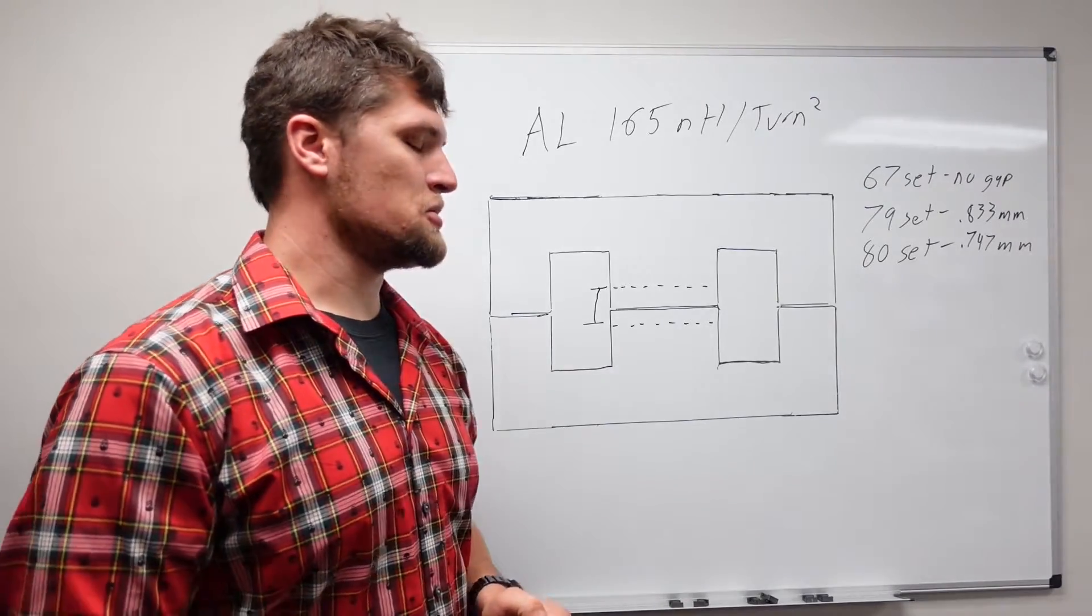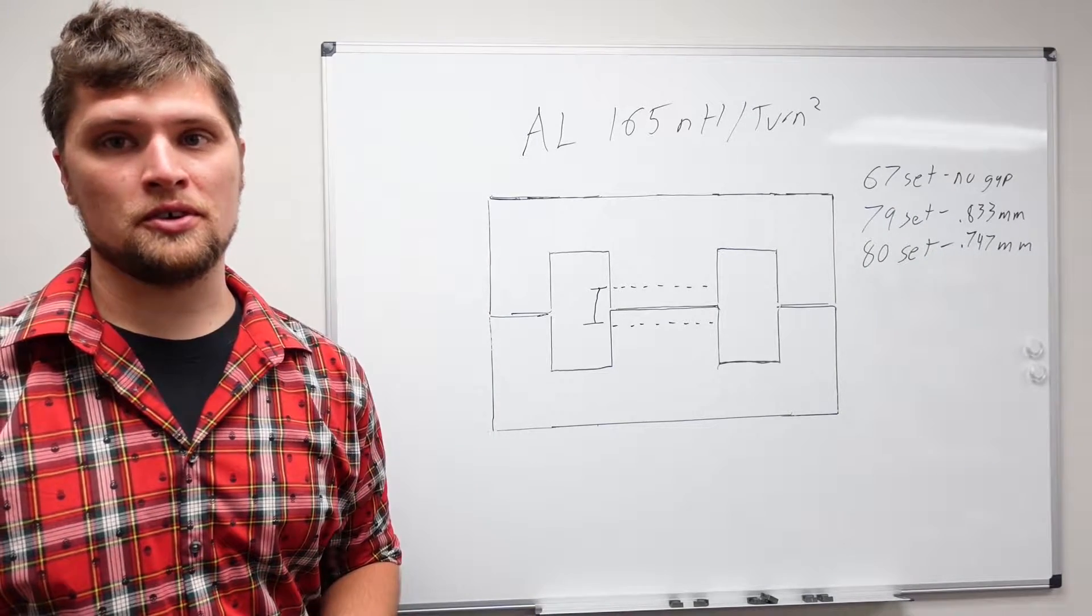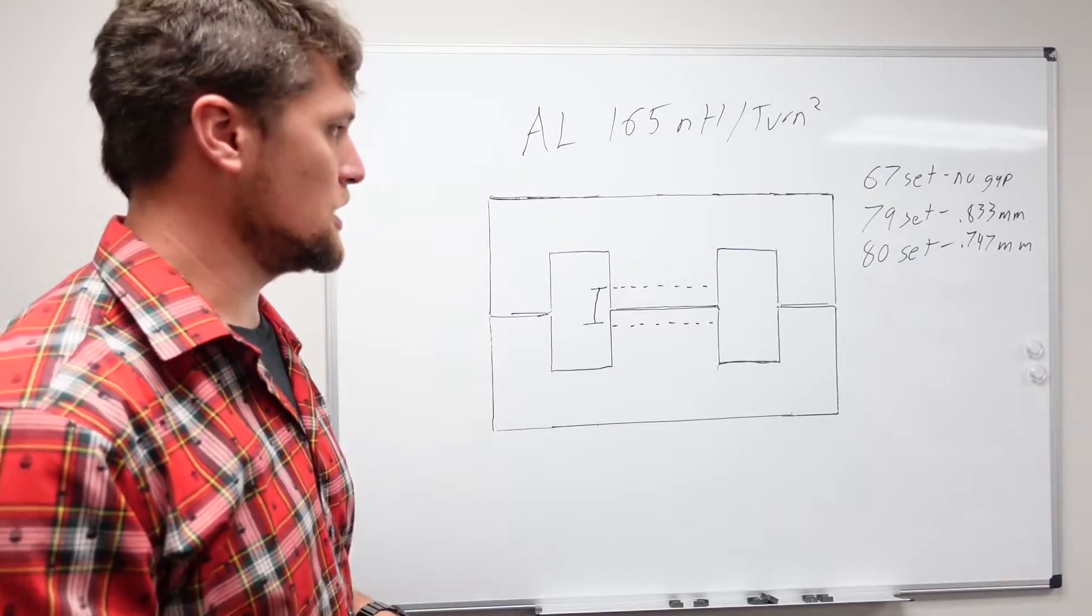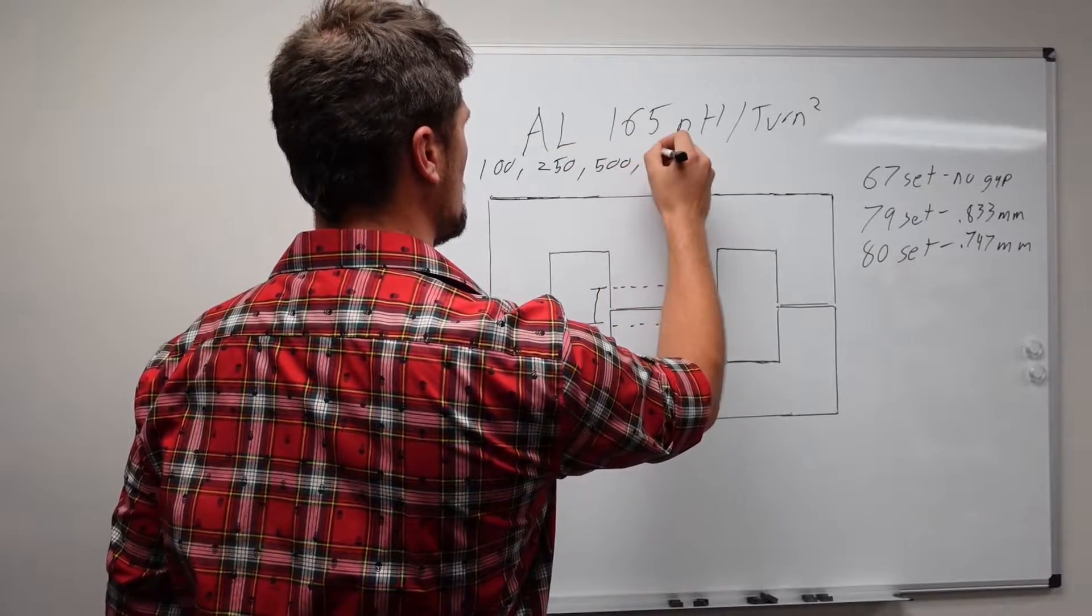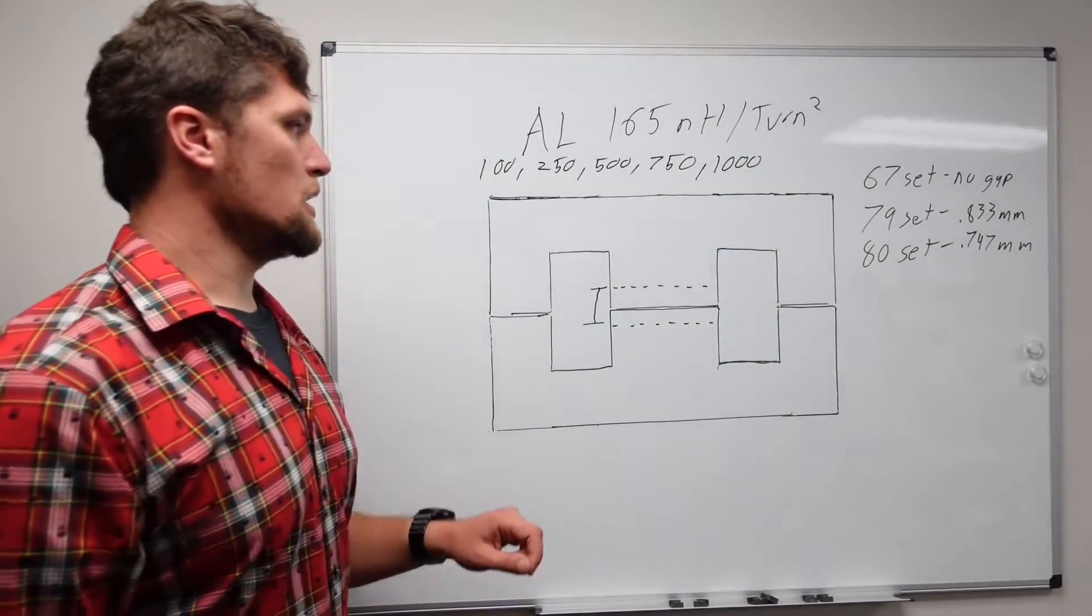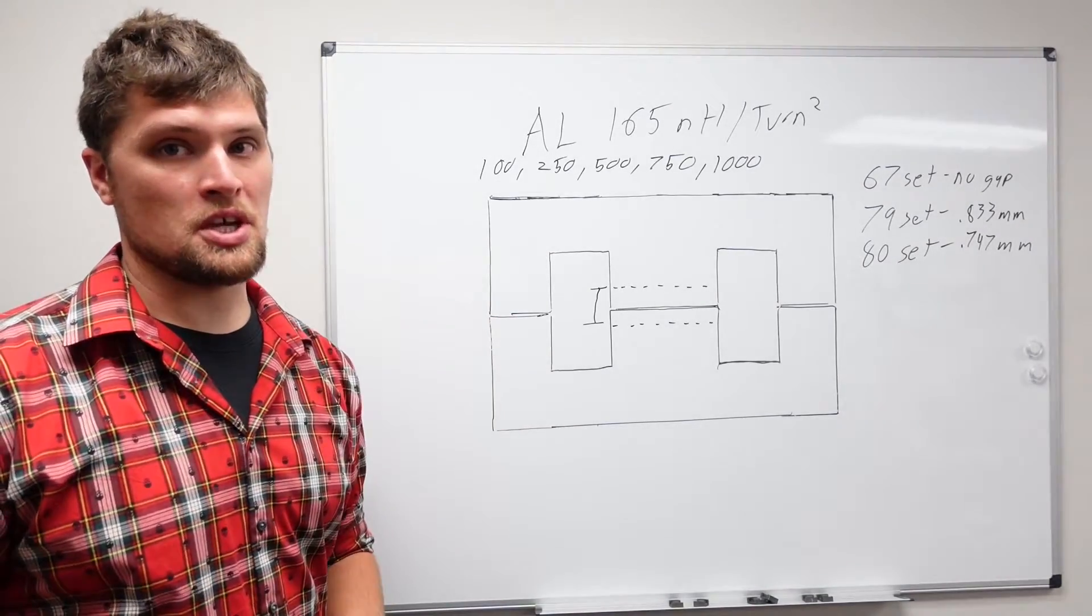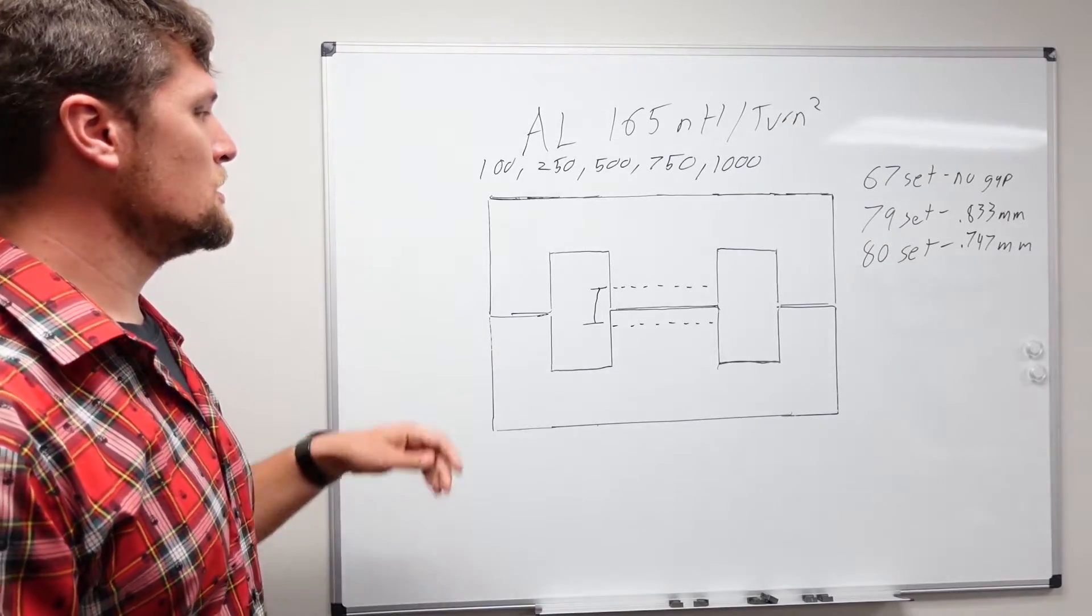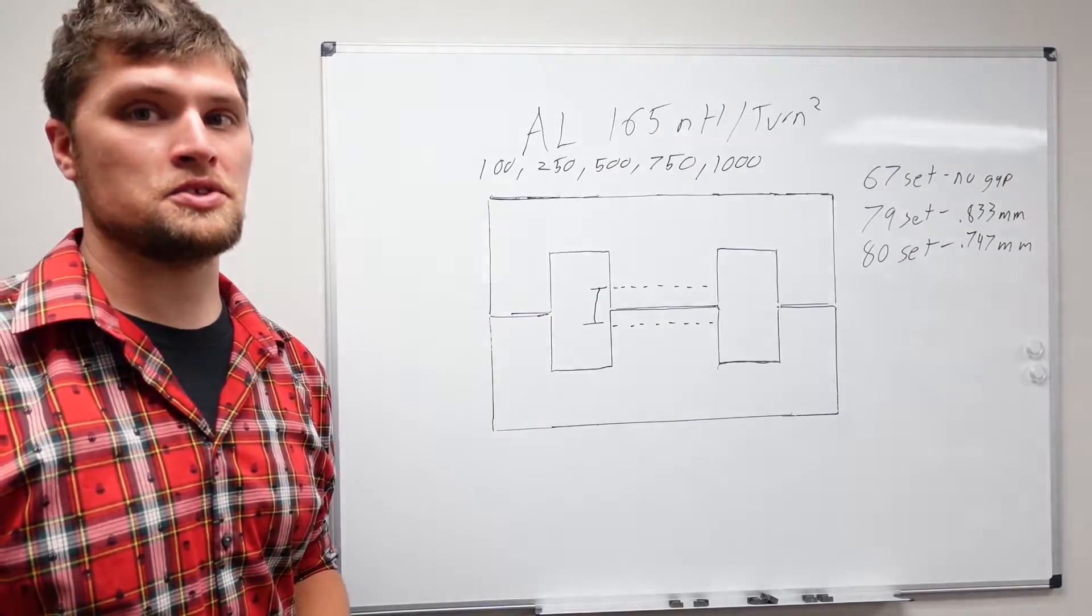So we're going to test a range of frequencies. And first thing we're going to do is look at inductance and quality factor over frequency. And then we're going to be doing some power loss measurements. And we're going to do those at 100, 250, 500, 750, and 1000 kilohertz. So we're going to run each of the core sets with the same winding up to different overall power loss wattages and observe what types of flux densities we're able to achieve with each of the three different core sets at these different test frequencies.